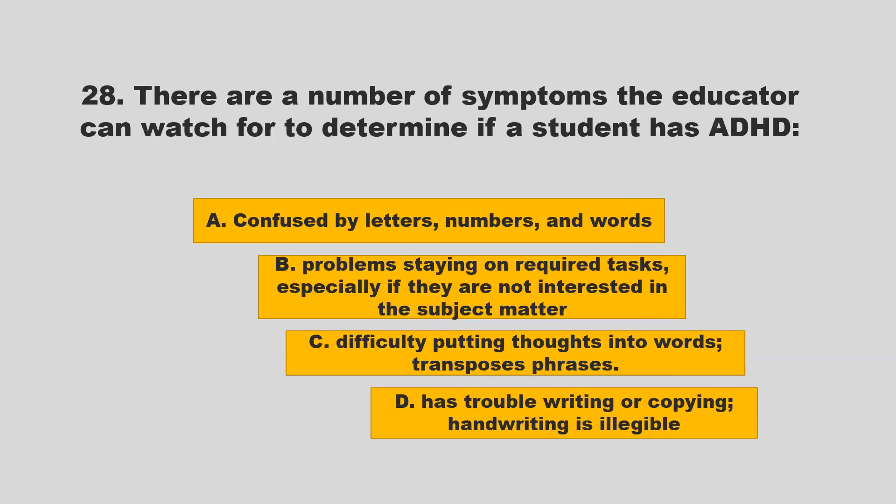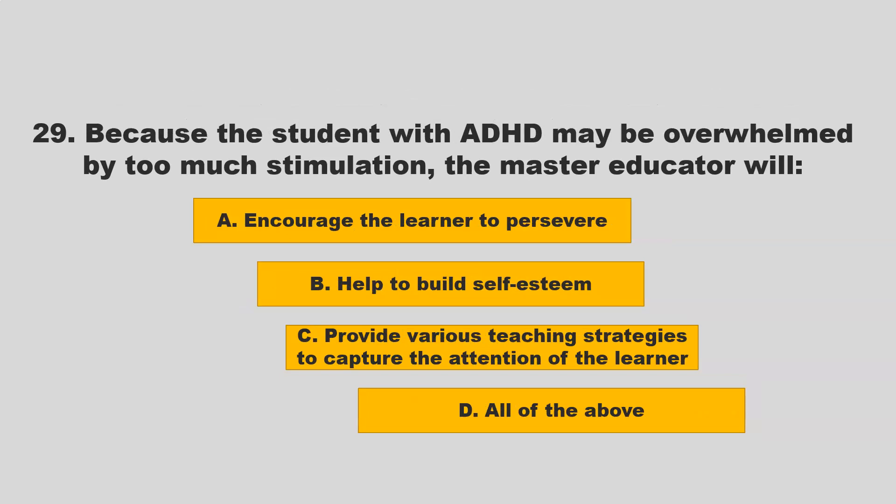There are a number of symptoms the educator can watch for to determine if a student has ADHD: A) confused by letters, numbers, and words; B) problems staying on required tasks, especially if they are not interested in the subject matter; C) difficulty putting thoughts into words, transposes phrases. If you chose B — problems staying on required tasks — you are correct.